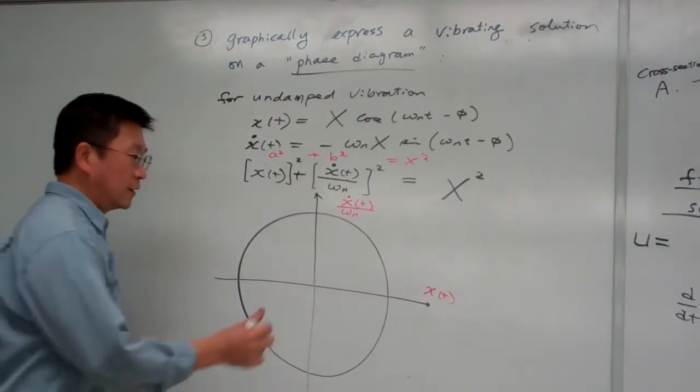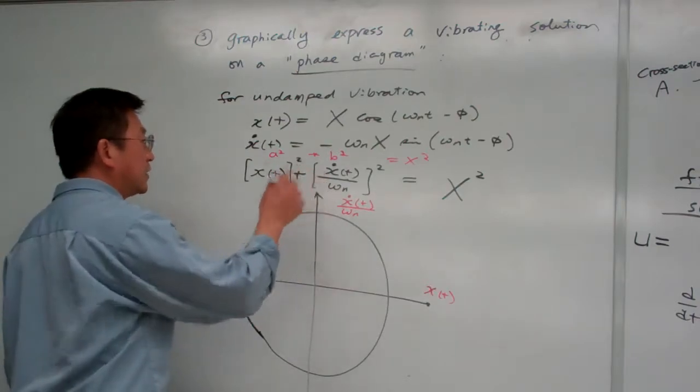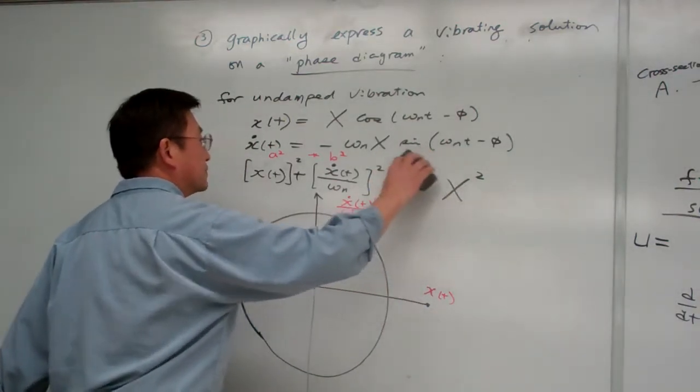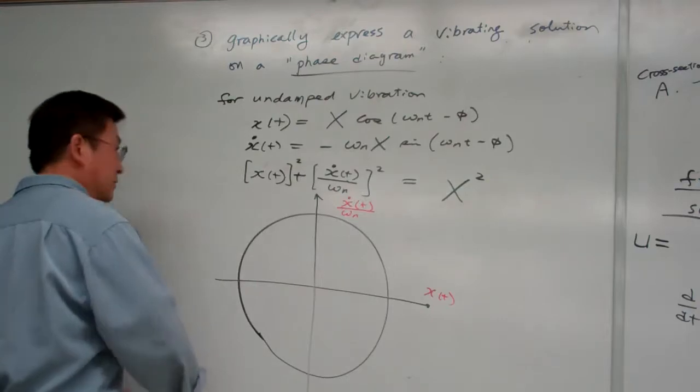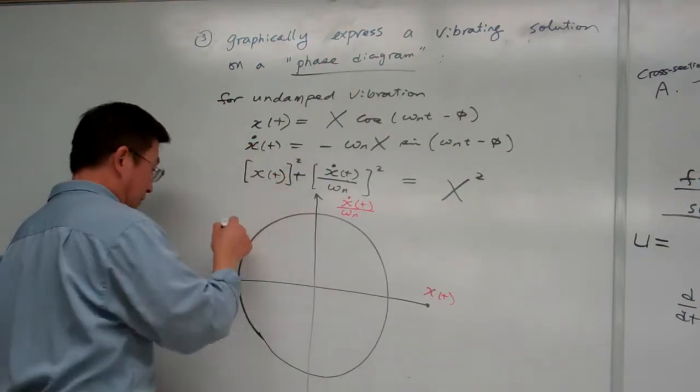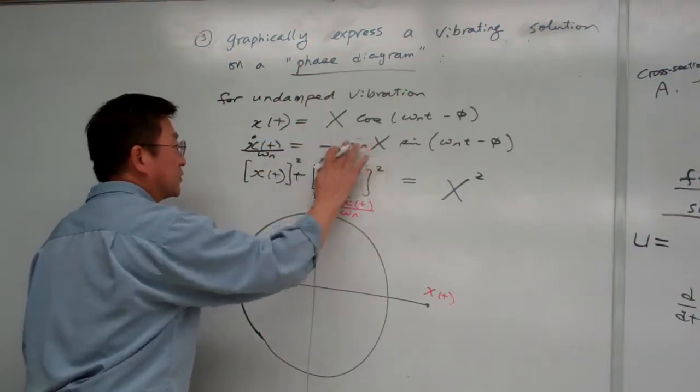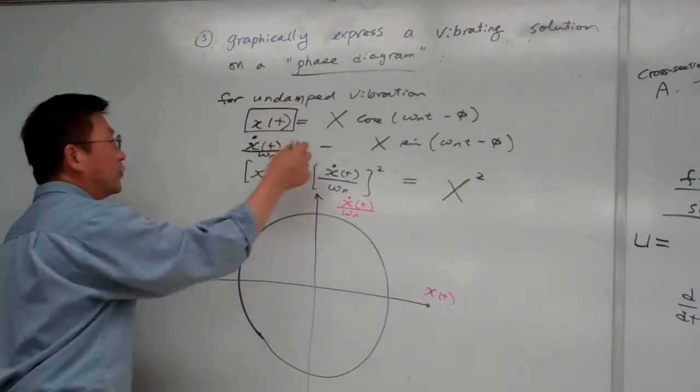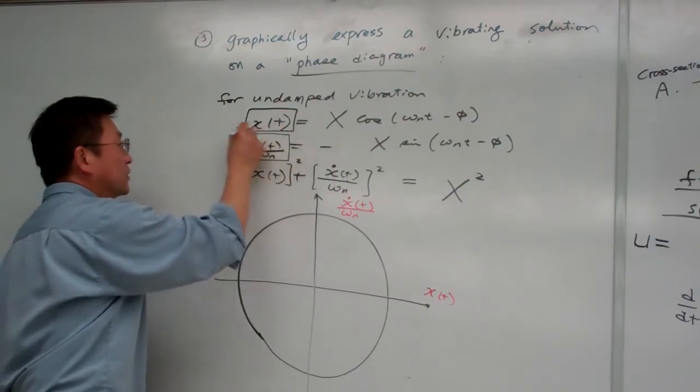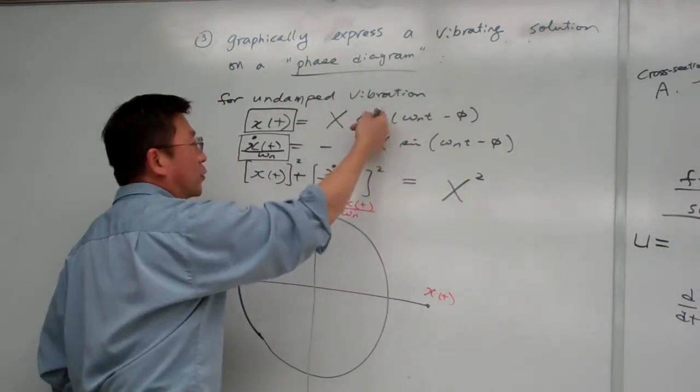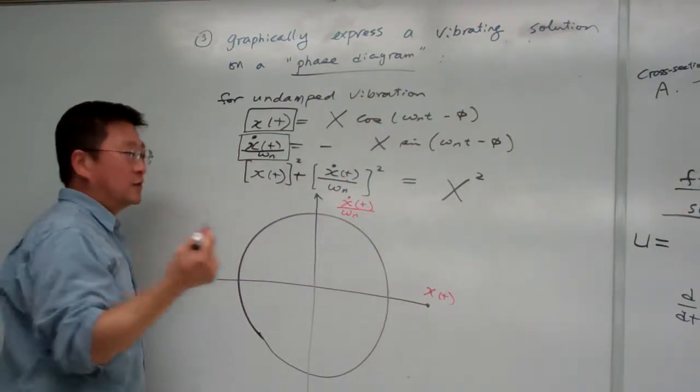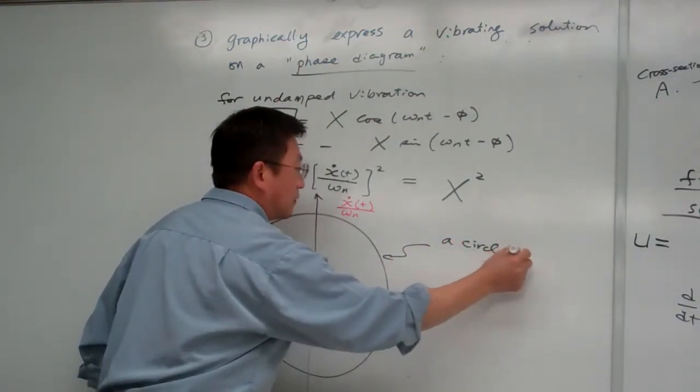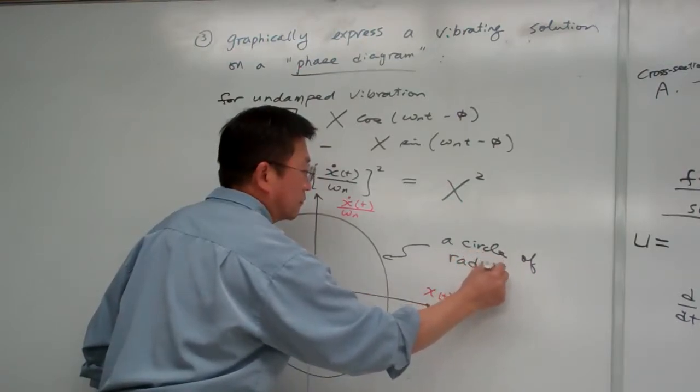Why does that have to divide by omega n? Because here, if I divide omega n, so basically this term becomes like this, right? And then the square of these terms equal to the square of this term. The square of these terms equal to the square of this term. Basically, it's x squared. Cosine squared plus sine squared equal to one. So in this one, I simply make up this one.